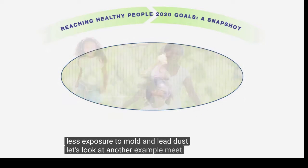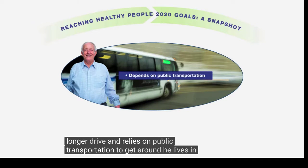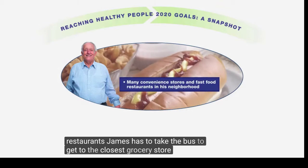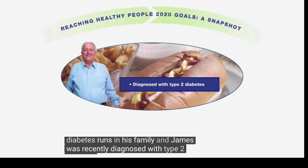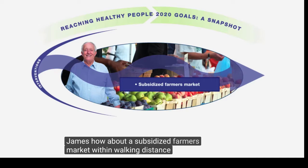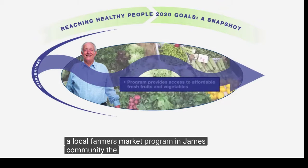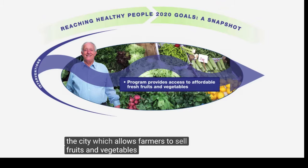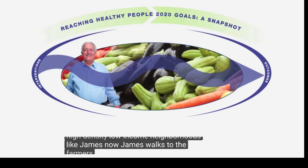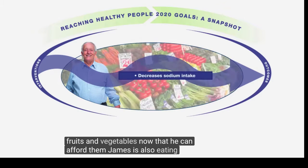Let's look at another example. Meet James, a 76-year-old Caucasian man. James can no longer drive and relies on public transportation to get around. He lives in a low-income neighborhood surrounded by convenience stores and fast food restaurants, and has to take the bus to get to the closest grocery store. Diabetes runs in his family, and James was recently diagnosed with type 2 diabetes. A subsidized farmer's market within walking distance is created by the city health department and a statewide farmer's organization. The program targets high-density, low-income neighborhoods like James's community. Now James walks to the farmer's market each week, increasing his physical activity. He's eating more fruits and vegetables now that he can afford them, and eating less canned food high in sodium.